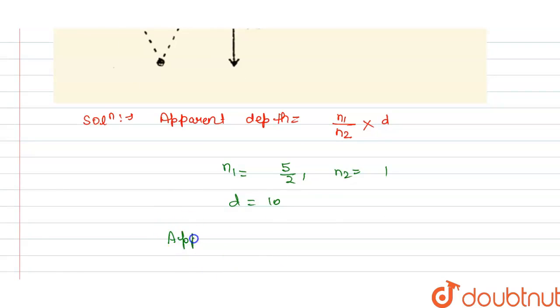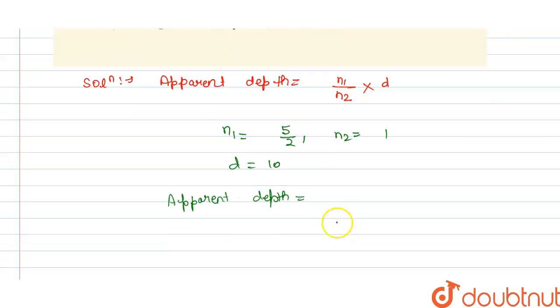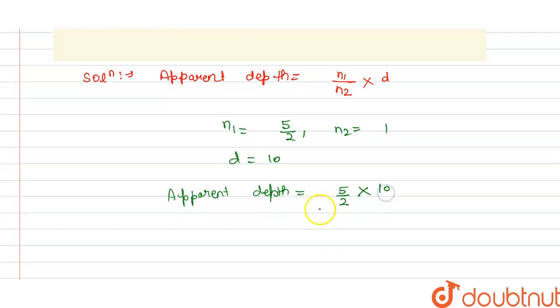...equals to n1 divided by n2, that is 5 by 2, and this is divided by 1, so no need to write the 1 here, and this is multiplied by 10. So from this we get this will cancel out, so we get apparent depth is 25 centimeter, and this is the answer for the question.